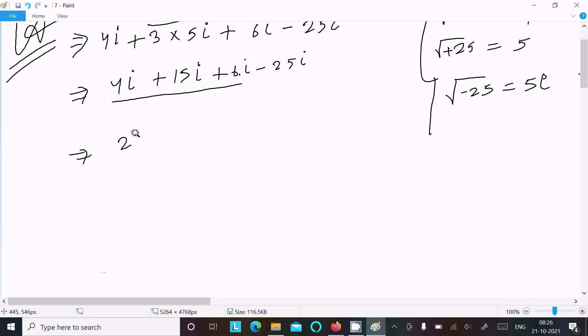That equals 25i, and here minus 25i. So this term and this term are the same, so this returns 0.